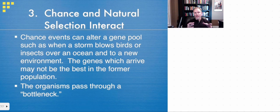Chance and natural selection often interact. We talk about chance events like bottleneck and so forth affecting the gene pool and the numbers of alleles within them. So if you have a storm that blows insects or birds or something like that into a new environment, the genes that get there are founding the new population and they might not be kind of representative of that entire population. Of course, these organisms go through a bottleneck.